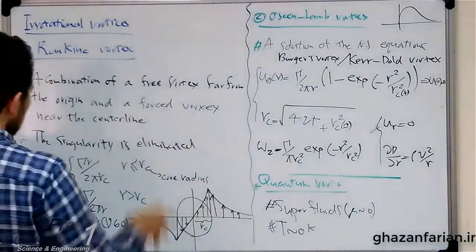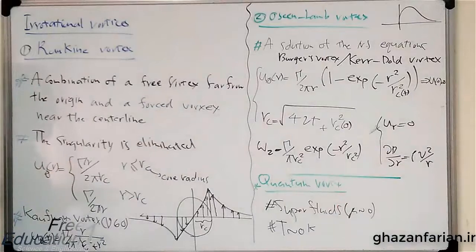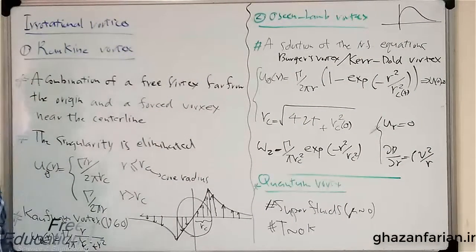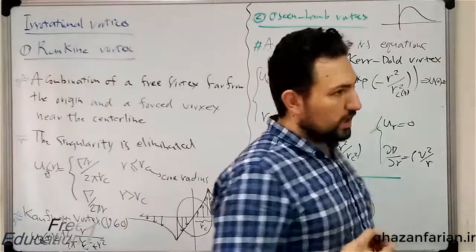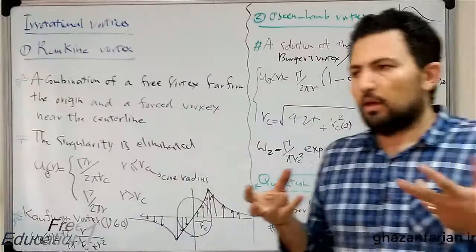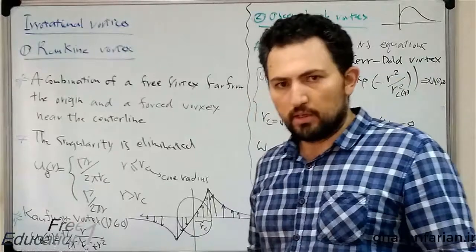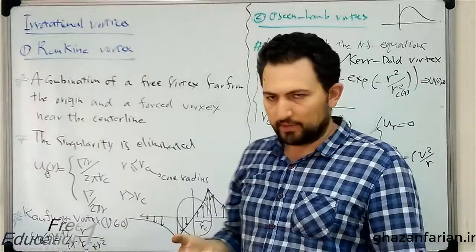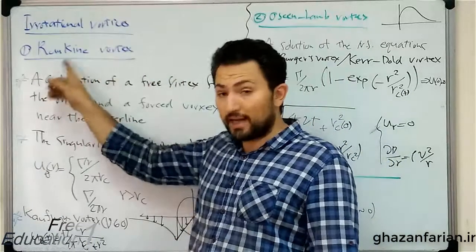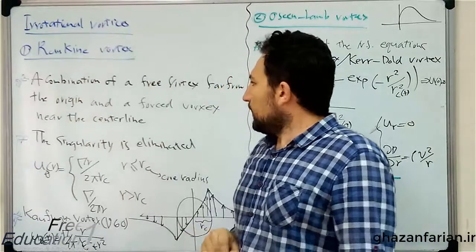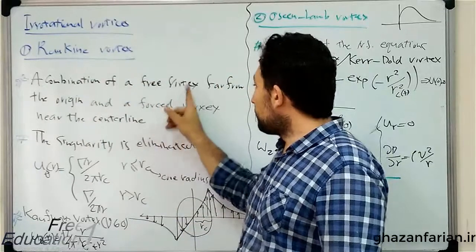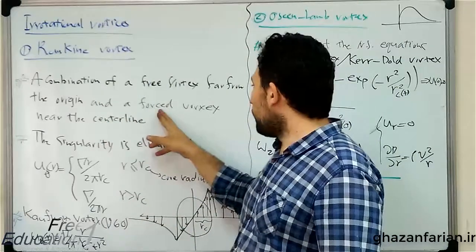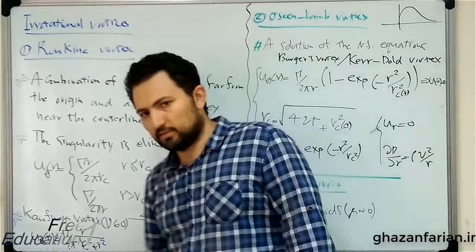Here we want to present mathematical models for realistic vortices, which do not possess singularity at the origin. The simplest form of the modified vortices is the Rankine vortex, which is a combination of a free vortex far from the origin and a forced vortex near the centerline.